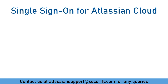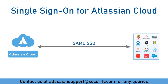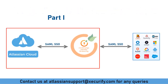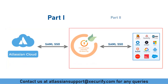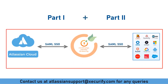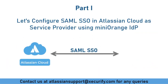As discussed earlier, we will be configuring SAML SSO in Atlassian Cloud with the help of Atlassian Access and any IDP, using Minirange Broker. The setup is divided into two parts. Part 1 will consist of configuration between Atlassian Cloud as SP and Minirange as IDP. In Part 2, we will configure SSO between Minirange as SP and any SAML IDP. Finally, we will combine both parts to show SSO between Atlassian Cloud as SP and any SAML IDP using Minirange Broker.